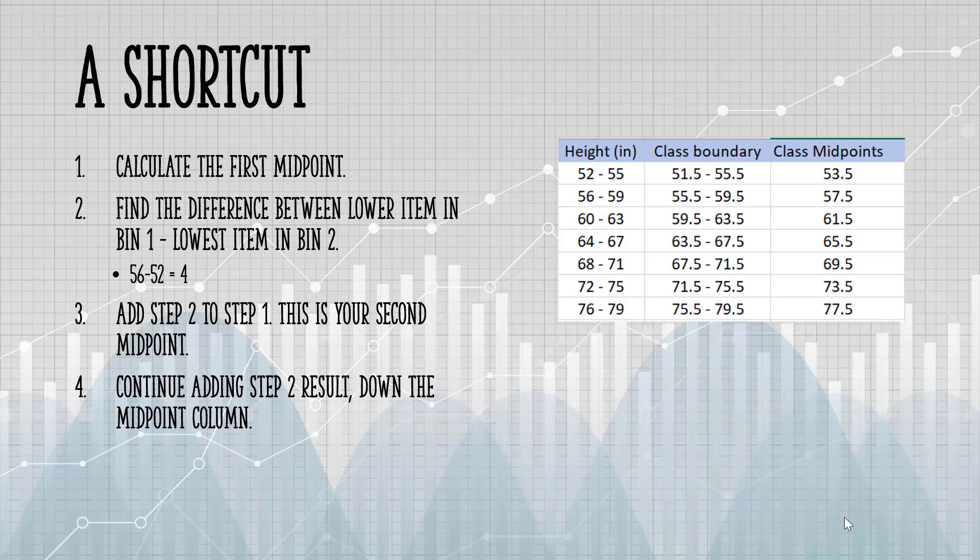Adding the two numbers together and dividing by 2 is a perfectly okay way to find the midpoint. But there is a different way. It's a little bit of a shortcut. After you've calculated the first midpoint...